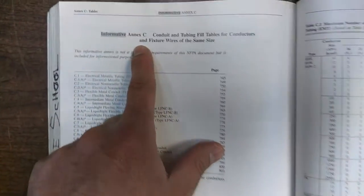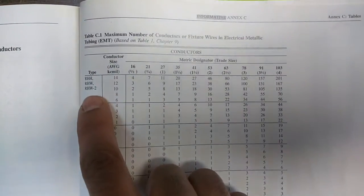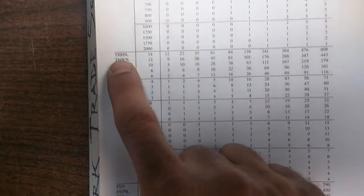Here's the NEC 2011. So we're going to go to Annex C, which starts here. And we're going to go to table C1, locate THHN on the type of wire. THHN is right here.